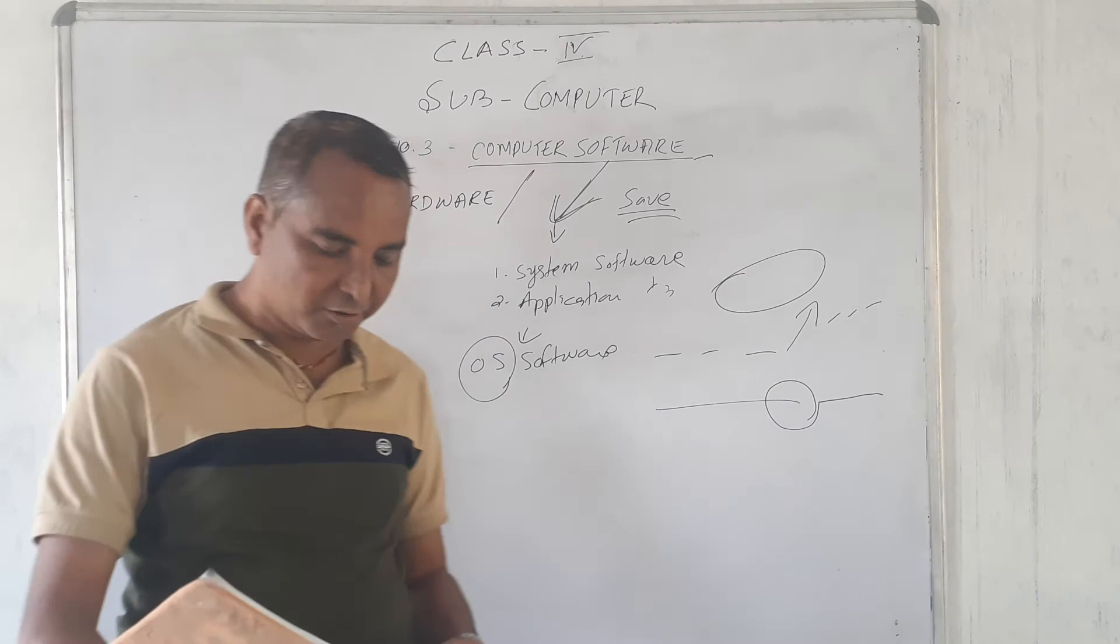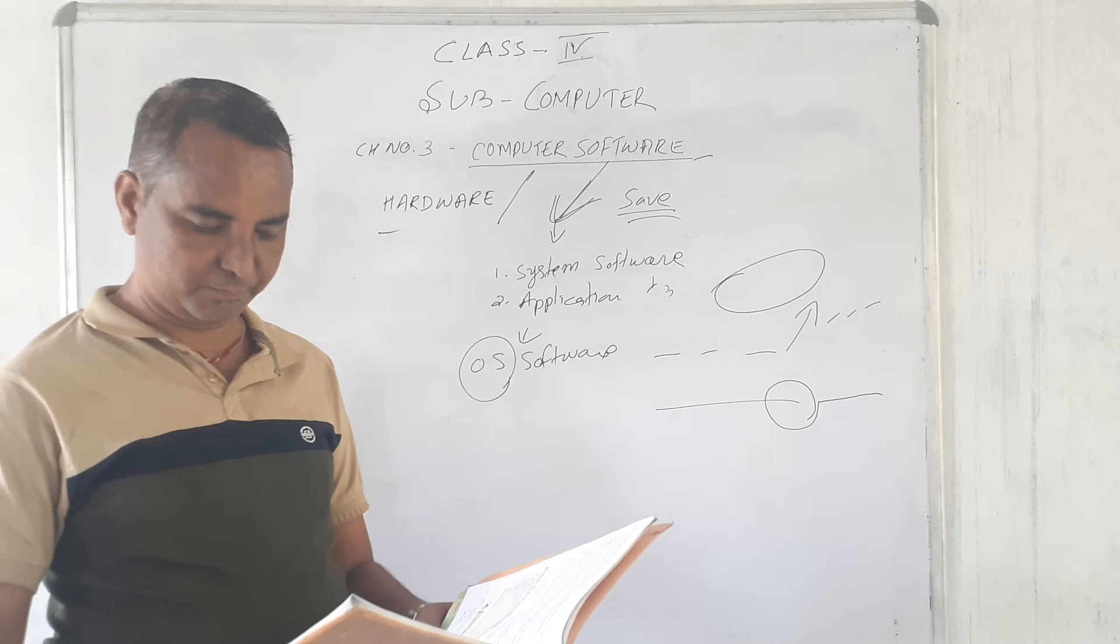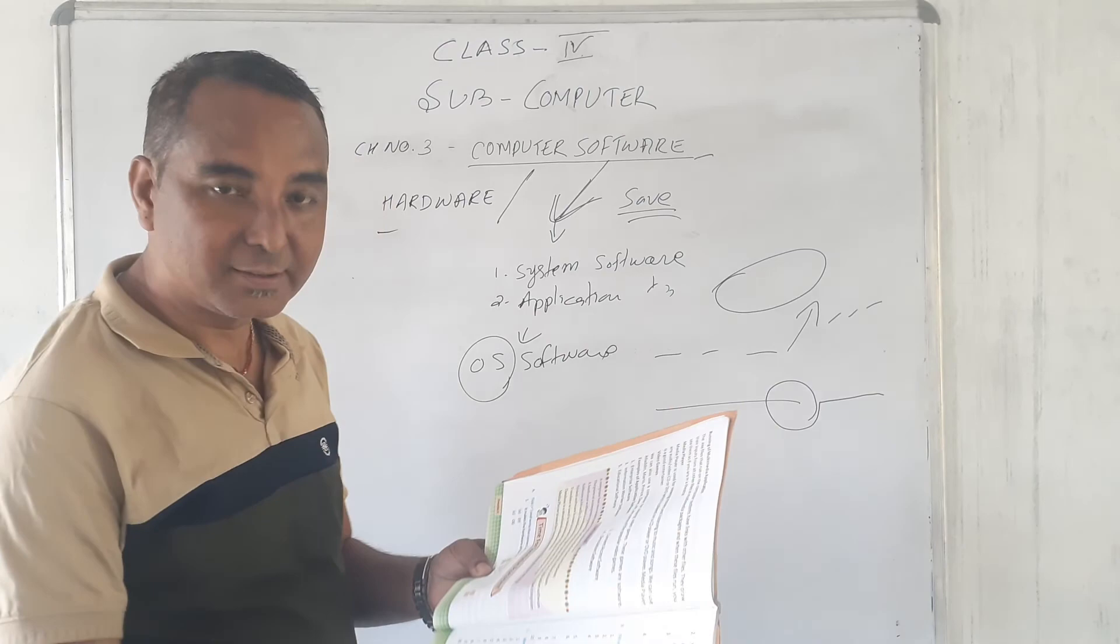Understood? So, please, you go through your exercise. That is, tick and write the correct answer, page number 32. It makes the hardware of the computer easy to use. What is that? OT, OP, OD, OS. Obviously, OS, operating system.